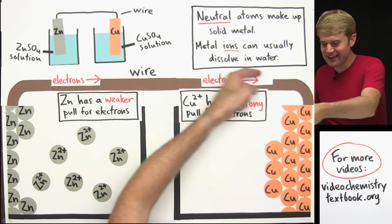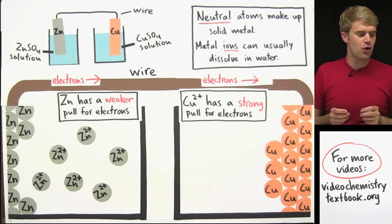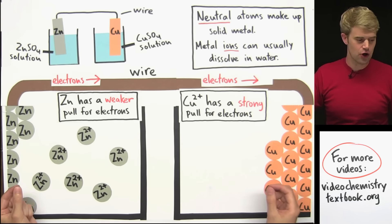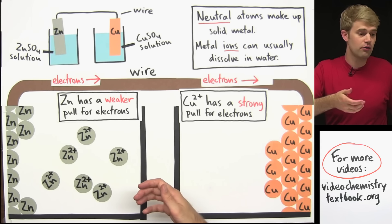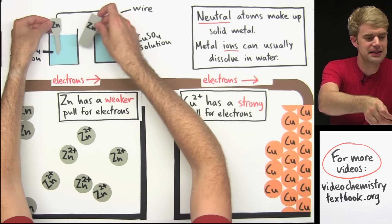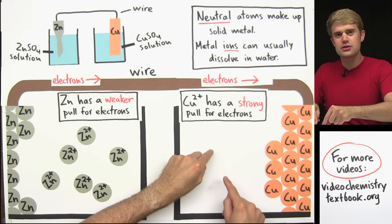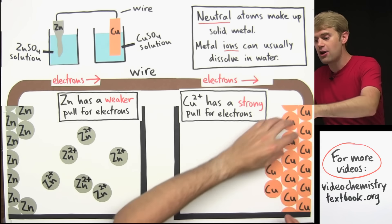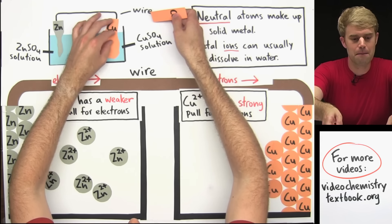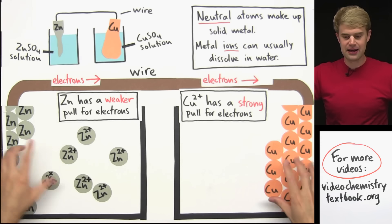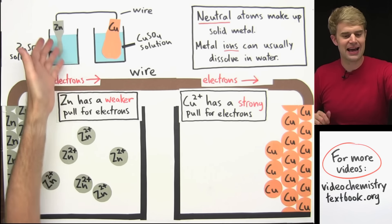If this process happens long enough, we actually see the two pieces of metal change. Zinc atoms keep coming off the zinc electrode, so it essentially dissolves — the piece of zinc gets smaller and smaller. On the other hand, Cu2+ ions keep coming out of solution and attaching to the solid copper, making that piece bigger and bigger. If we let this voltaic cell run long enough, we'll see the two pieces of metal actually change size and shape.